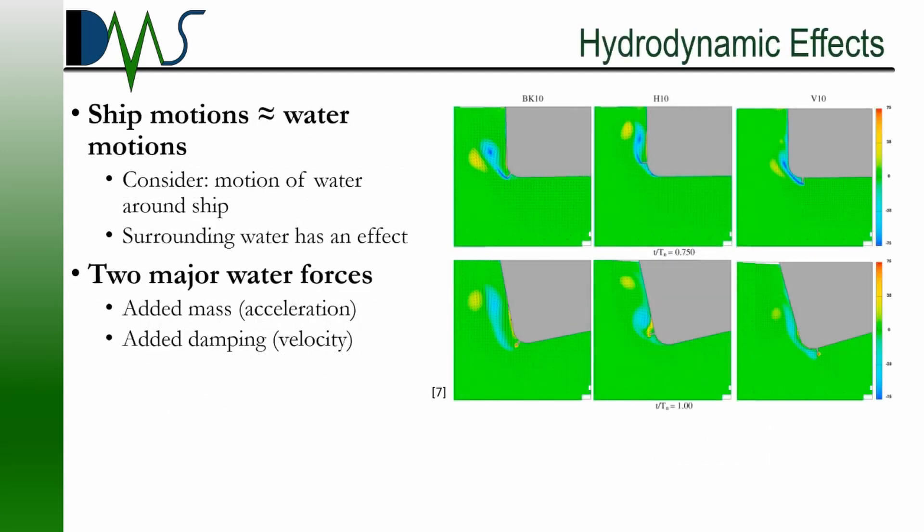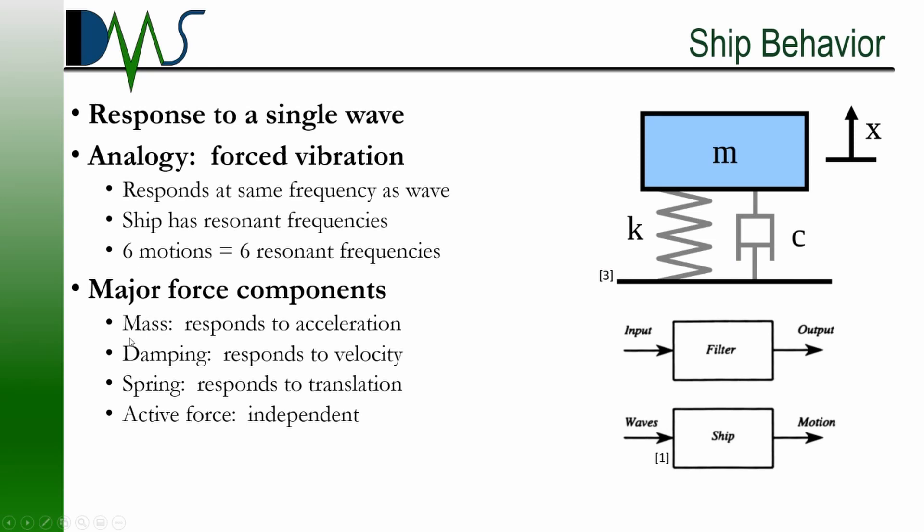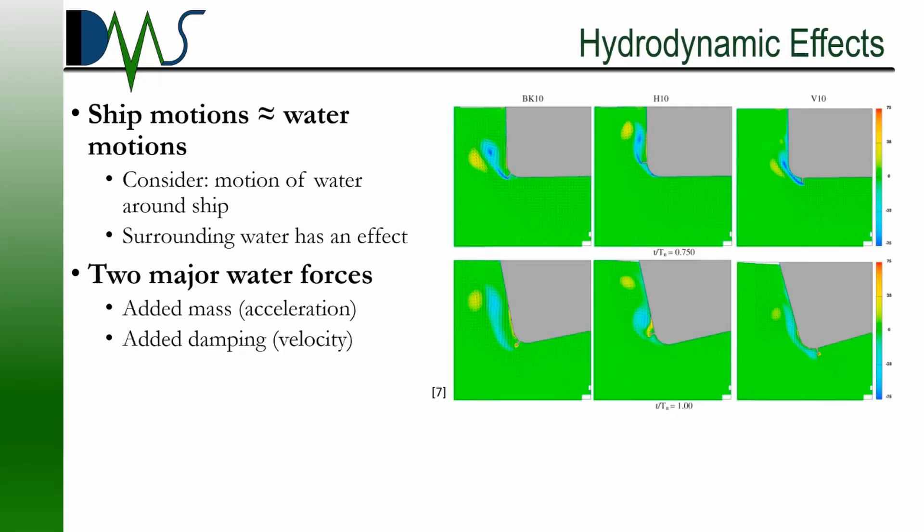One of the biggest questions is the hydrodynamic effects. When we were talking about these different force components, our mass, damping, spring, and active force. One of the biggest questions in seakeeping is what are these components? What is the magnitude? Something like mass? Well, that's somewhat easy. We can figure out the mass of the ship. A lot of this we can calculate just from the physical properties of the ship, just adding up the weight of all the structure. But the hydrodynamic effects, the interaction with the water, that's the complicated part of the ship interactions.